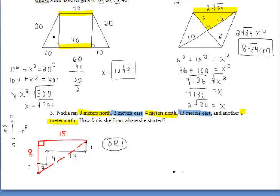So 3 plus 4. So she ran 8 meters north, which is what we have over to the left. And then she ran 15 meters east. So we could draw that in.